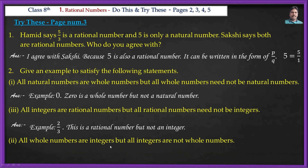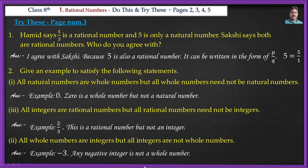All whole numbers are integers, but all integers are not whole numbers. In whole numbers there are no negative numbers, so any negative integer is not a whole number.